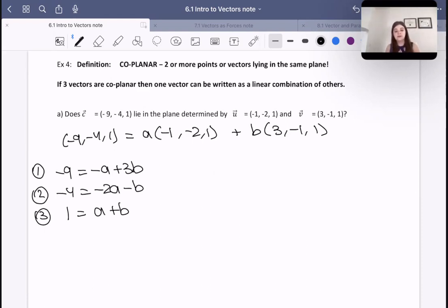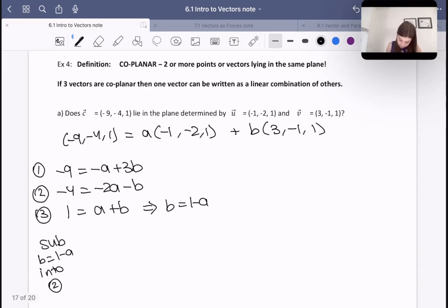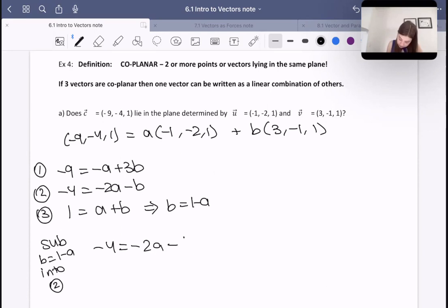So number one is negative 9 equals negative A plus 3B. The second equation would be negative 4 equals negative 2A minus B. And then number three would be 1 equals A plus B, okay? So we would like to know if they lie in that plane. So let's figure that out. So first things first, I would like to solve for A and B. So I'm actually going to say, well, equation three looks very simple to me. I can just say that this means that B is equal to 1 minus A. And I can sub B equals 1 minus A into equation two. So that means negative 4 is equal to negative 2A minus 1 plus A. That means negative 3 is equal to negative A. And that means A is equal to 3.